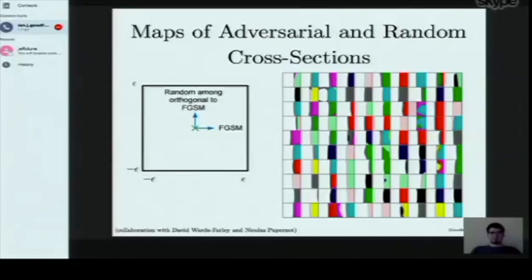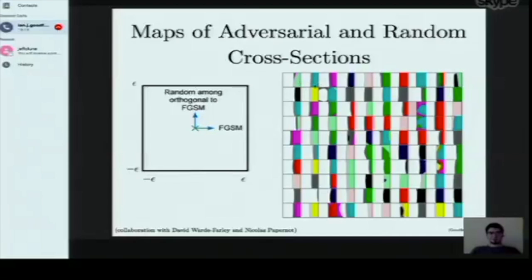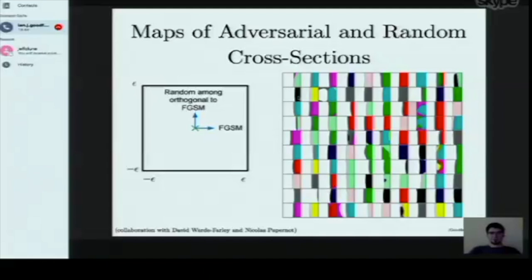In almost all of these plots there's a very straight line running nearly vertically through the plot, meaning space is essentially divided into a pair of half-spaces as you move in the adversarial direction. The random direction up and down has very little effect. White regions indicate correct classification; colored regions show different incorrect classes. We begin in the correct region, then as we move right we enter a different half-space classified as a single incorrect class. This tells us adversarial examples exist in dense, large regions — not fine pockets that are hard to find.